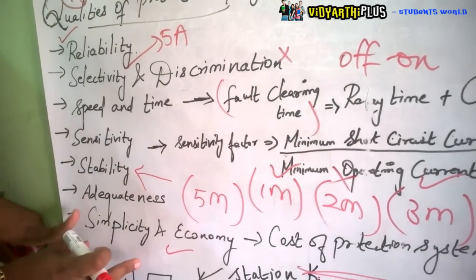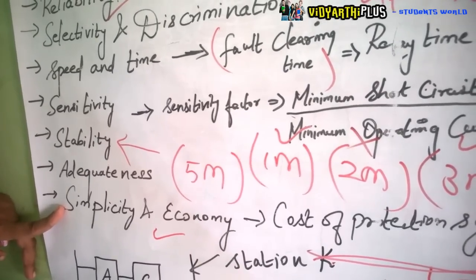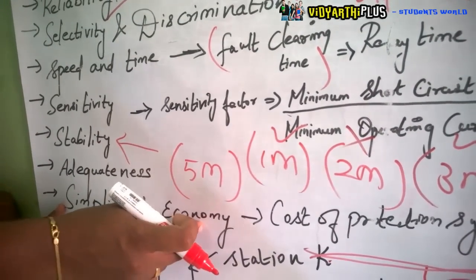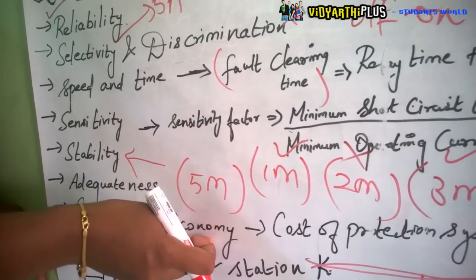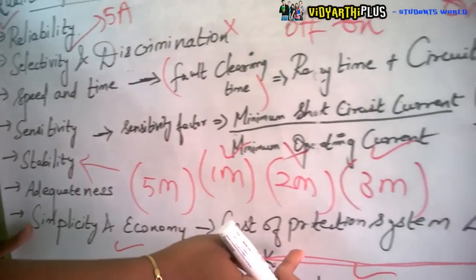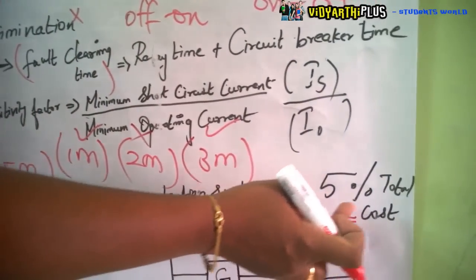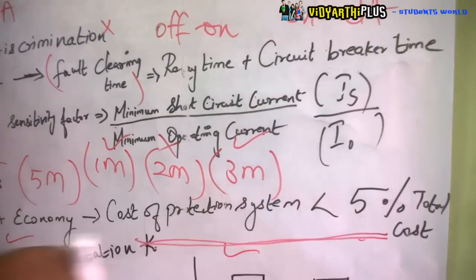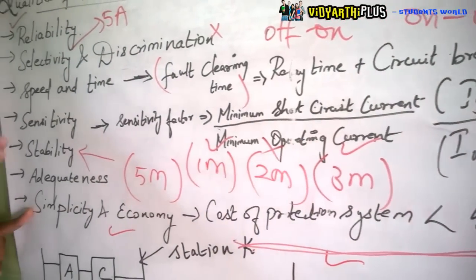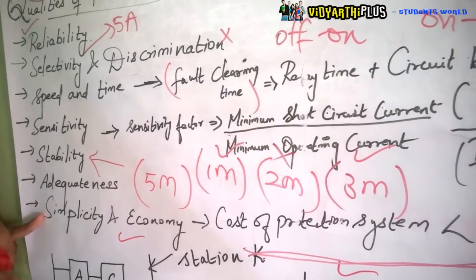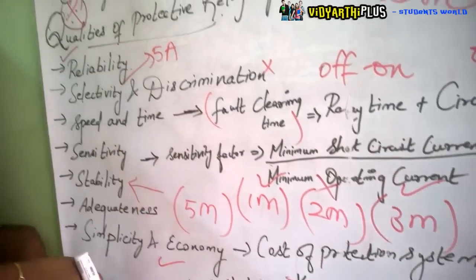Next is simplicity and economy. The relay which we design for fault protection should be simple in nature and also economically feasible. The cost of the protection equipment should be less than 5% of the total cost of the equipment. The relay should be simple in design and also cheap in cost. These are the qualities for protective relaying.